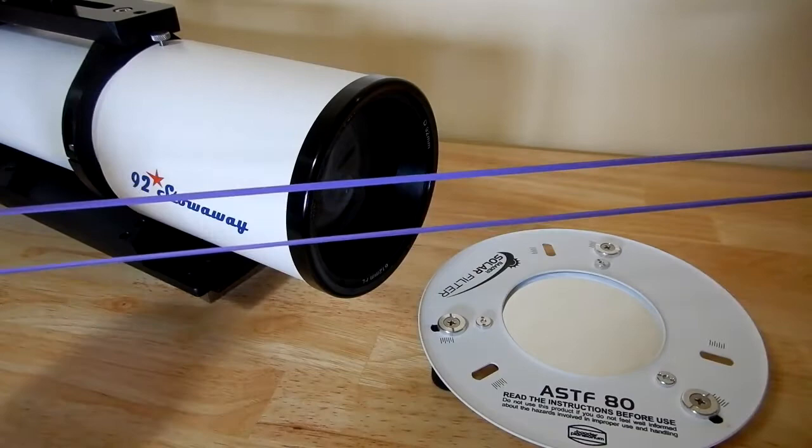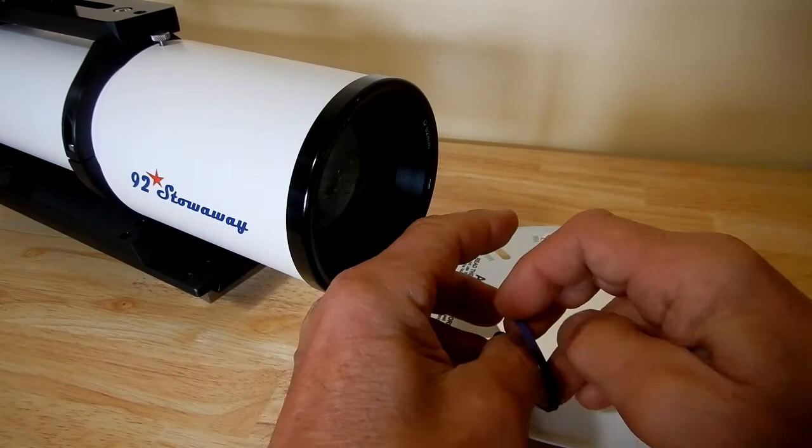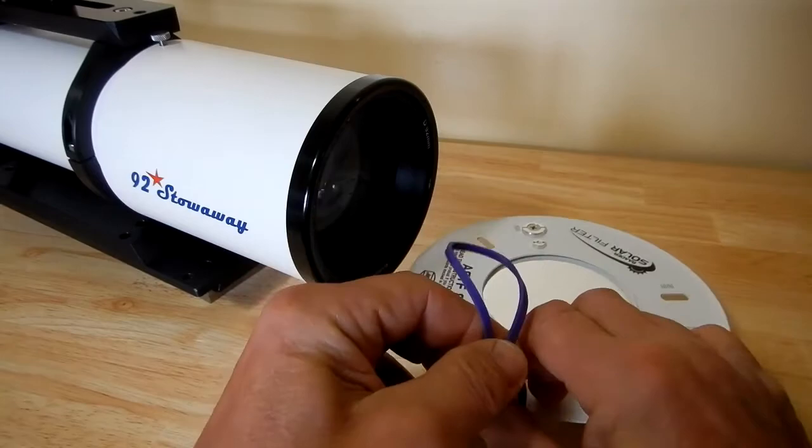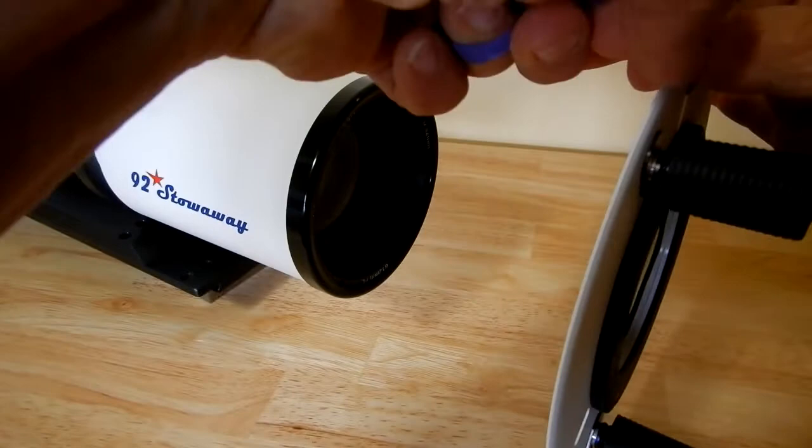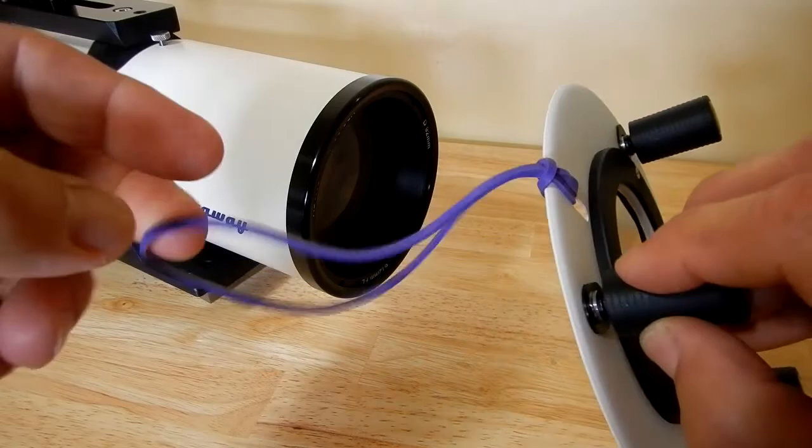So what I'm going to do is pull it through the hole like that, bring the other end in, and simply feed it through there like this. So now there's your three rubber bands around the perimeter.